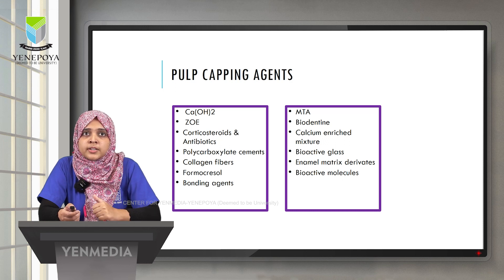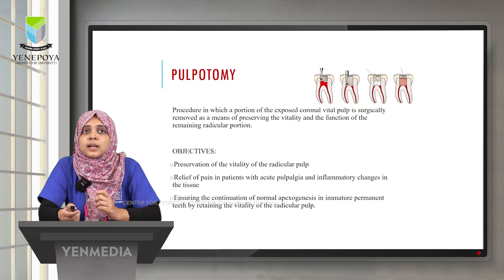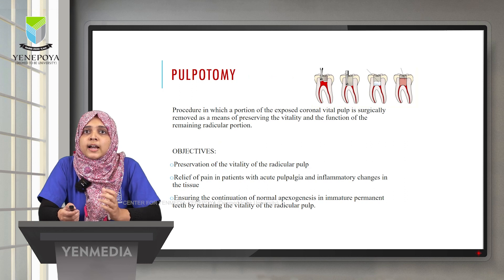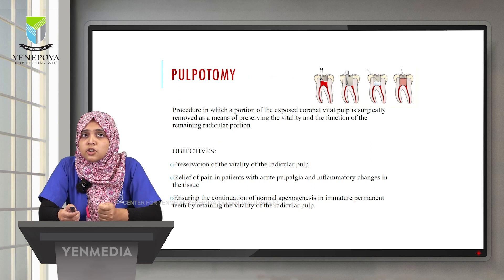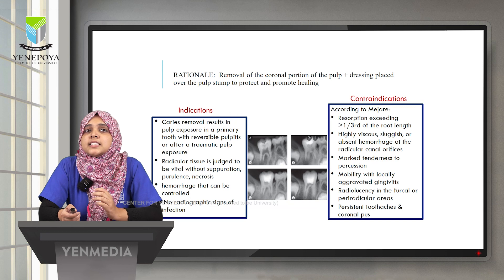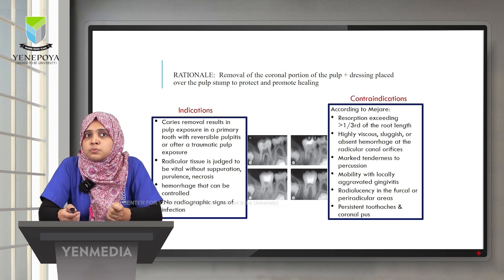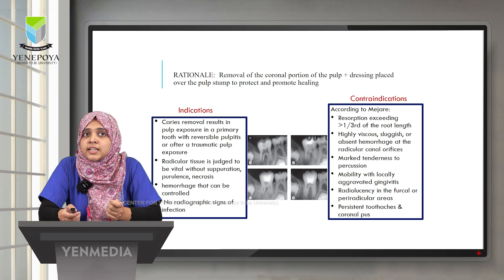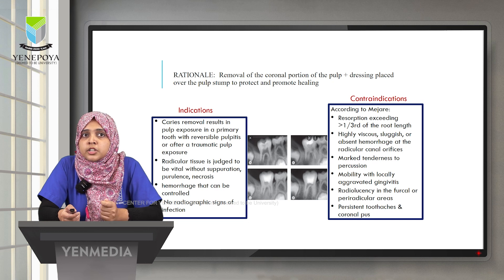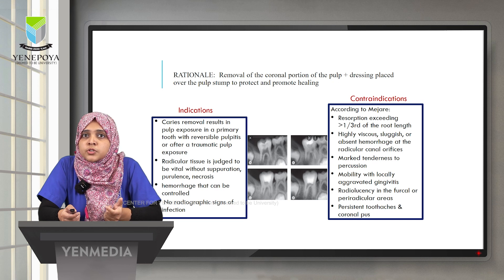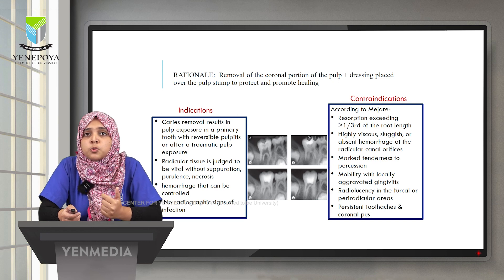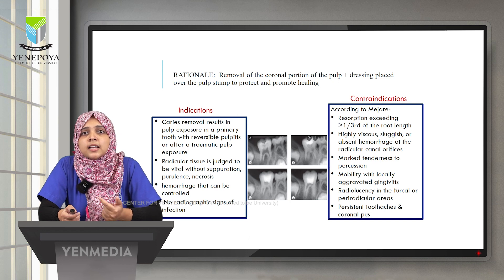Modern pulp capping agents include MTA, Biodentine, calcium-enriched mixtures, and bioactive glasses, which have shown good results. Pulpotomy is the surgical removal of the exposed coronal vital pulp to preserve the vitality and function of the remaining radicular portion. Indications include caries exposure especially in primary teeth with reversible pulpitis and controllable hemorrhage. Contraindications include root resorption, marked tenderness to percussion, mobility, persistent toothache, or coronal pus.